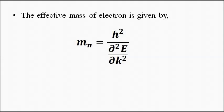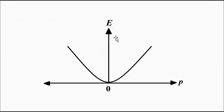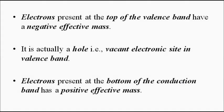The energy of the electron with respect to the wave vector shows a parabolic relationship, and the same kind of diagram applies for energy versus momentum — the variation of energy with respect to the momentum of the electron. This is for a free, single electron.